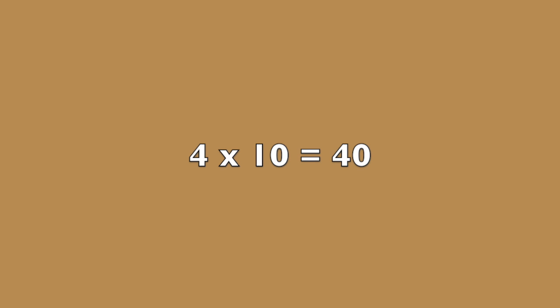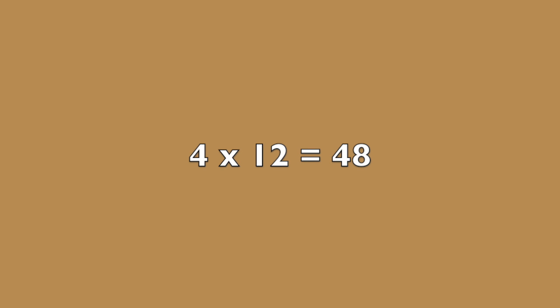Four times nine is thirty-six. Four times ten is forty. Four times eleven is forty-four. Four times twelve is forty-eight.